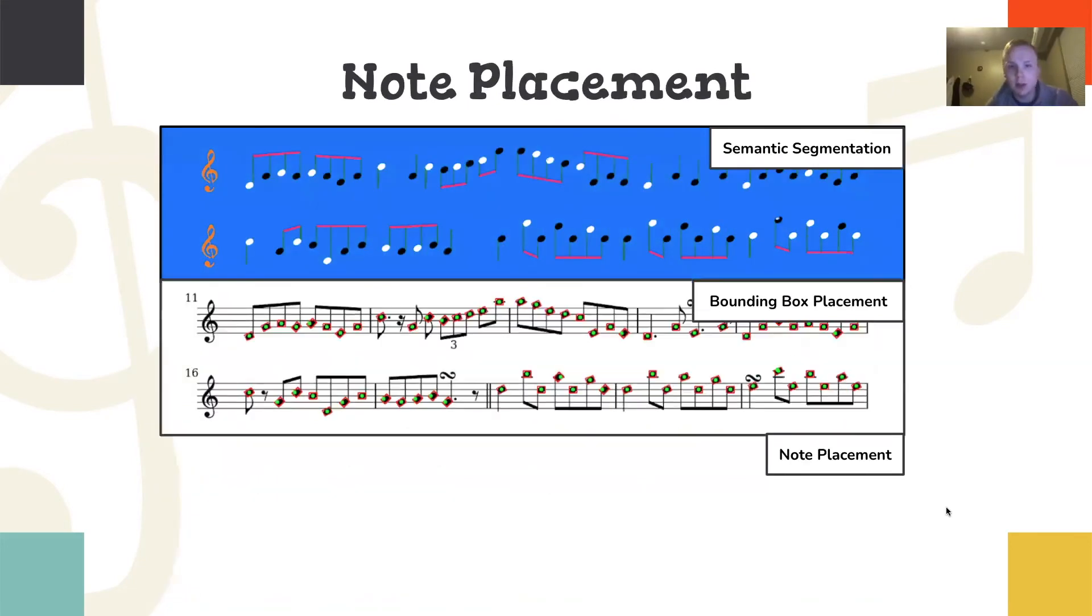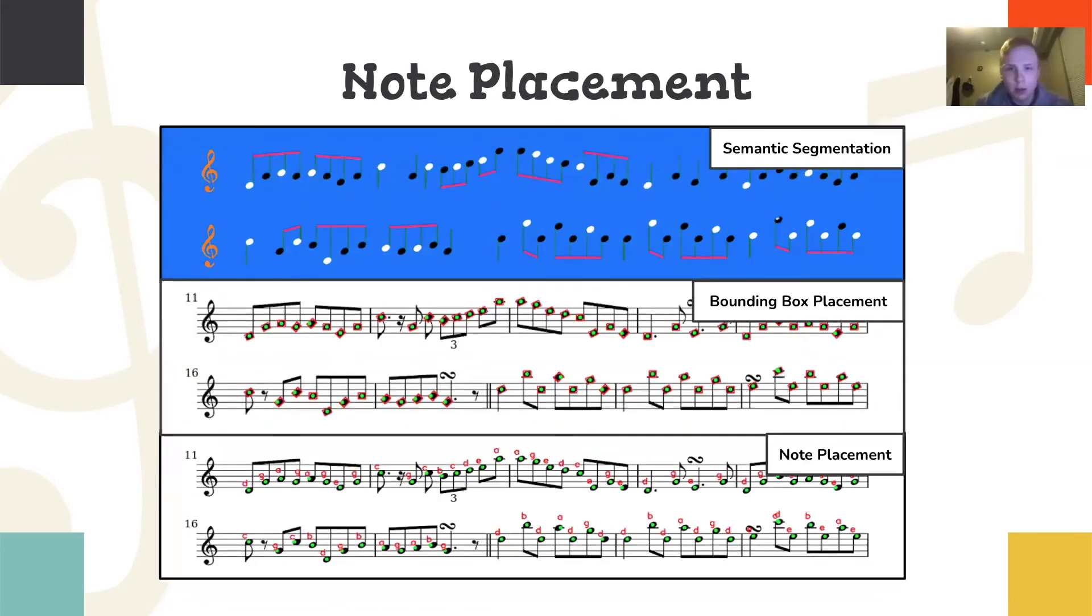So the note placement is where everything kind of comes together. We started off with semantic segmentation, and we can determine every actual note there. And then we can have every note as a CV contour, and then from that we get the center of every note. And then with the center of every note and then the staff lines, we can actually determine the note name based on the distance from that center line.